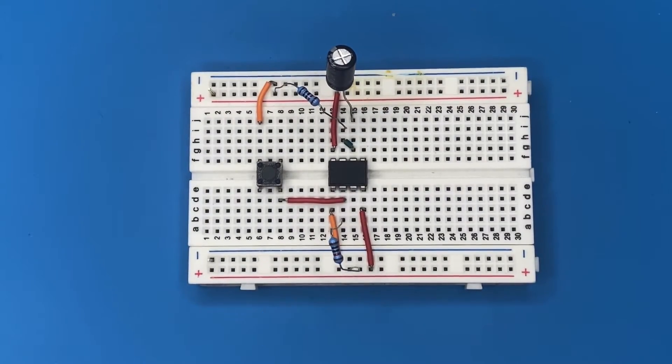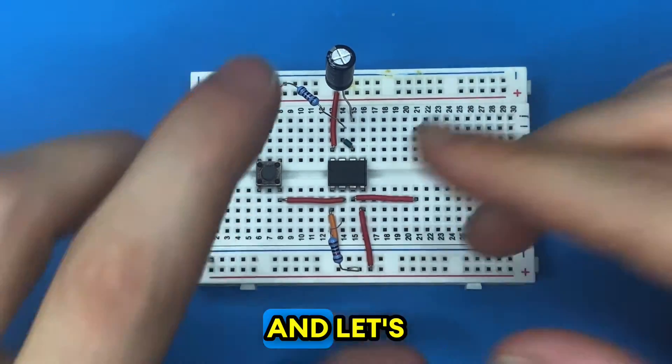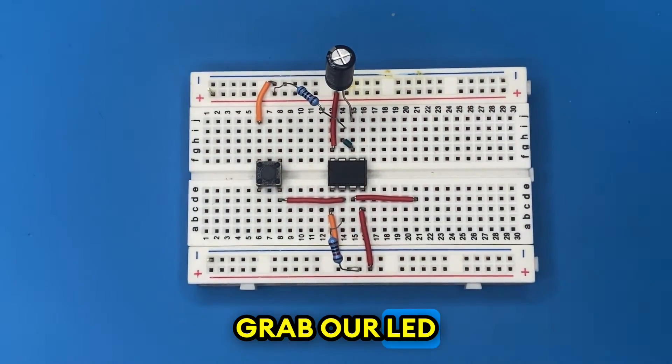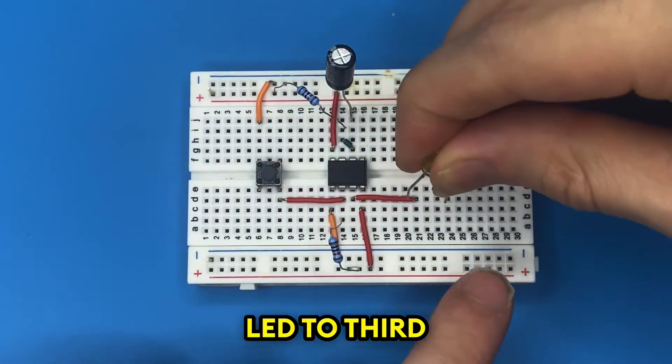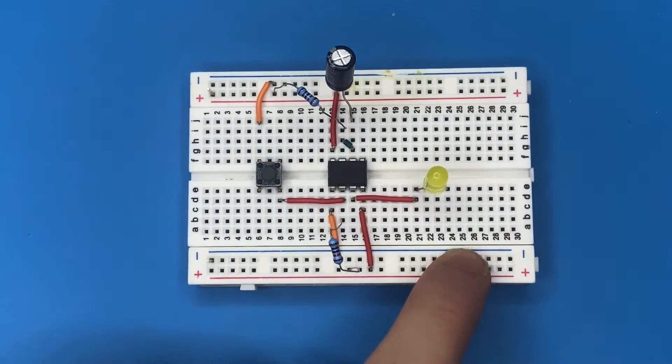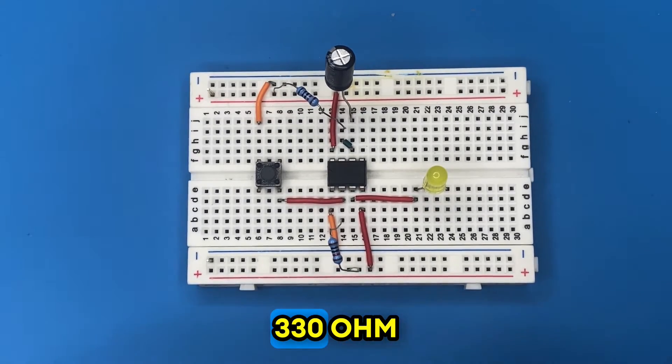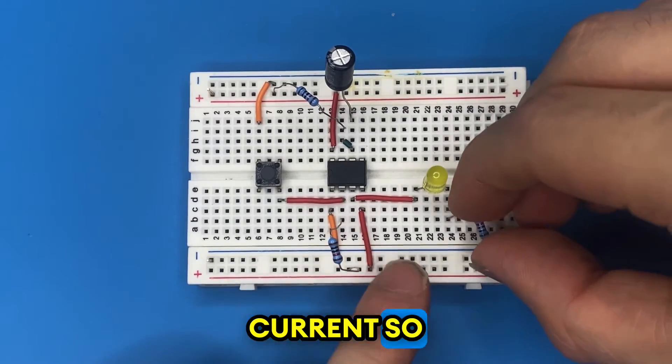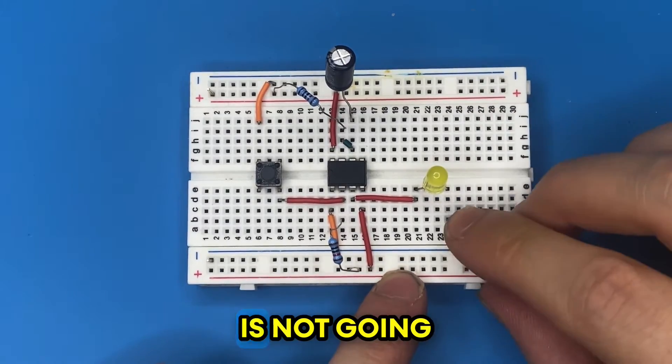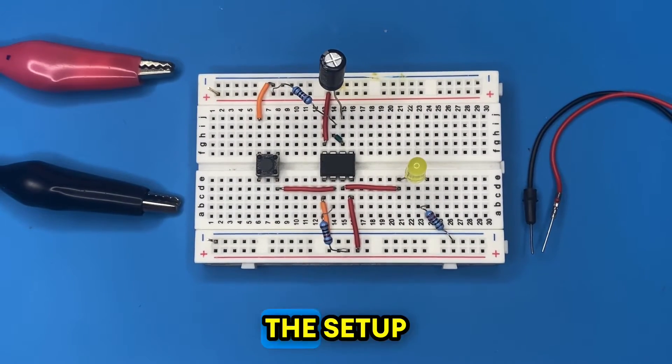Let's extend the third pin of the IC which is our output pin, and grab our LED and connect the anode of the LED to third pin of the IC. I'm going to ground the LED using my 330 ohm resistor. The resistor is going to limit the current so that the LED is not damaged. We are pretty much done with the setup and wiring of the circuit.